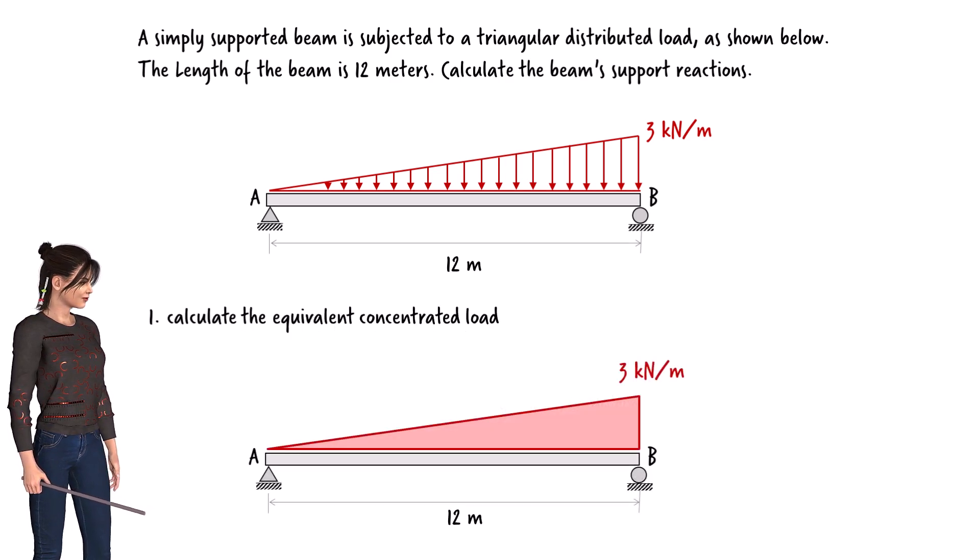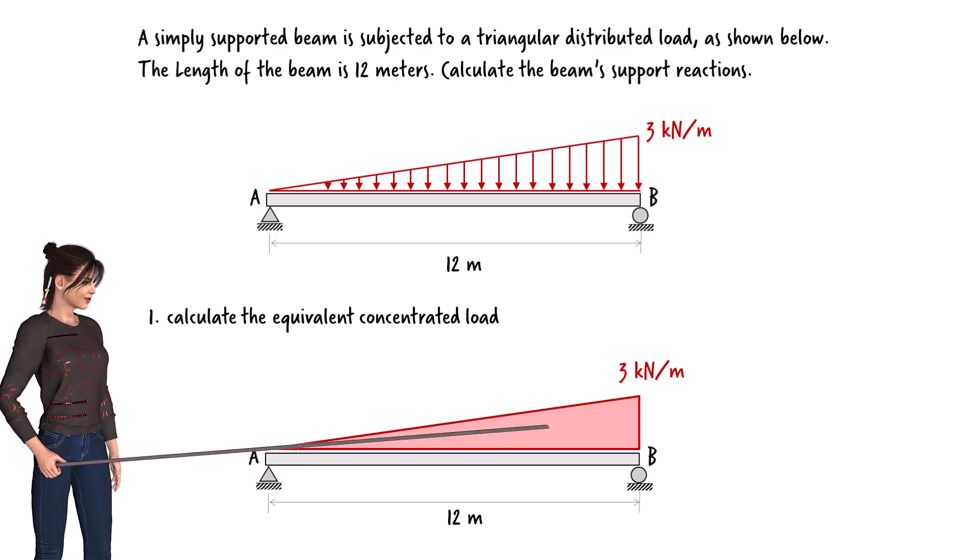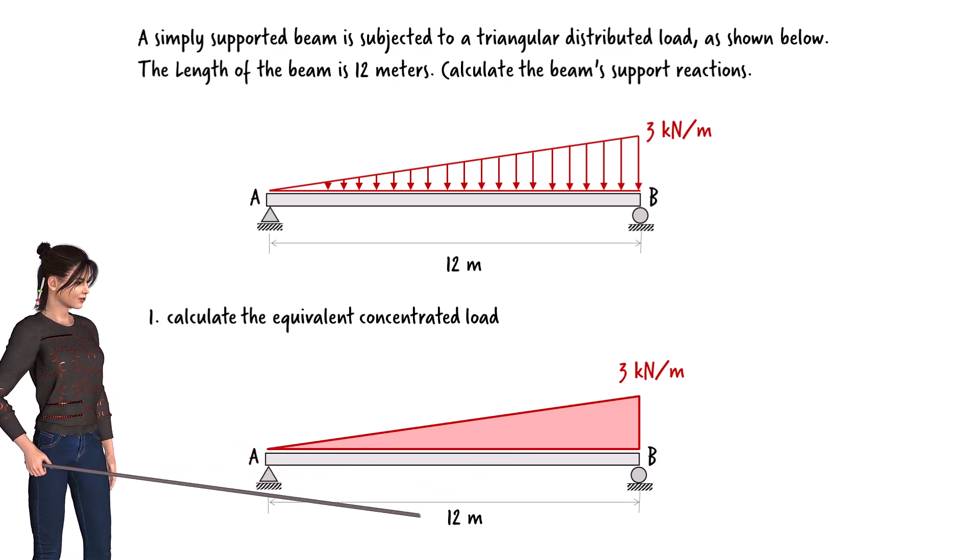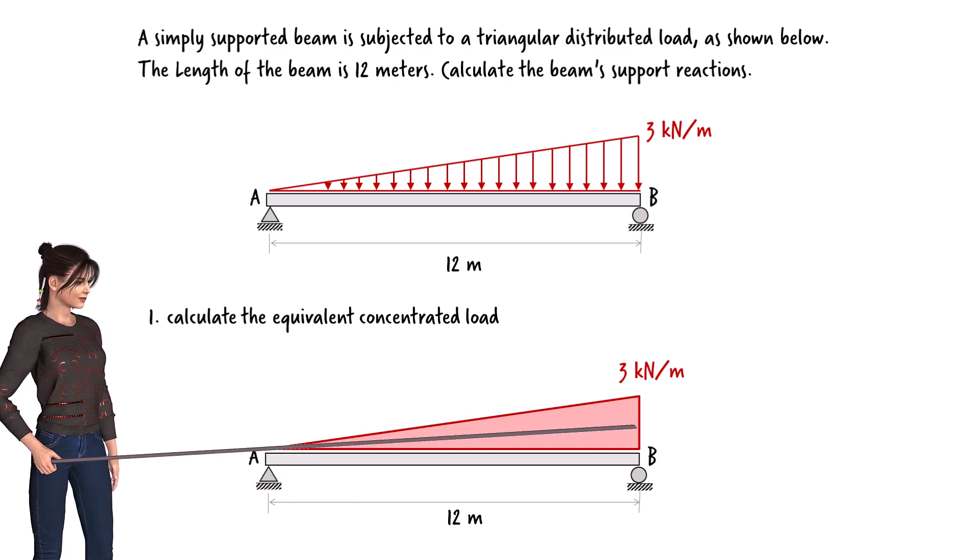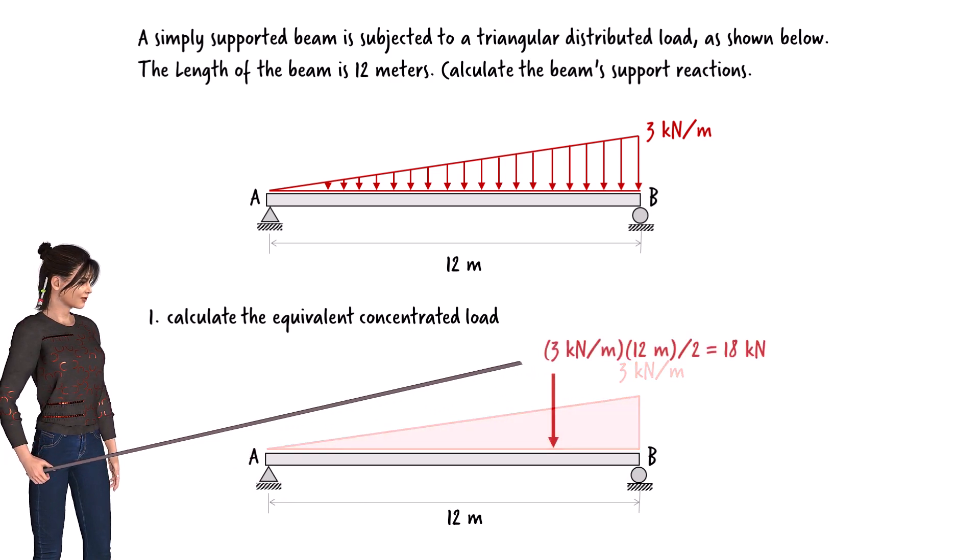Step 1: Calculate the equivalent concentrated load. For a triangular load, the magnitude of the equivalent concentrated load equals the area of the triangle. In this case, the base of the triangle is the length of the beam, 12 meters, and the height is the intensity of the load at the right end, 3 kN per meter. So the area of the triangle equals...